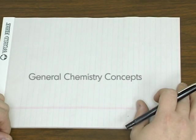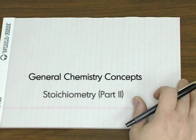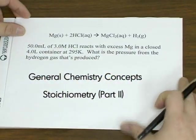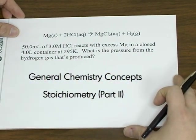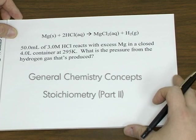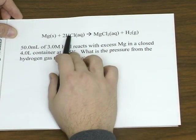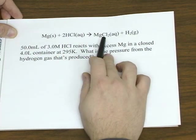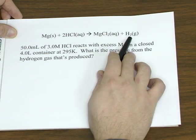Let's do a couple of other stoichiometry problems that tie in some other concepts that we've looked at. For example, let's look at the reaction between magnesium and hydrochloric acid to give you magnesium chloride and hydrogen gas.